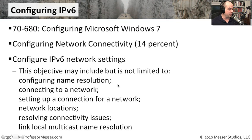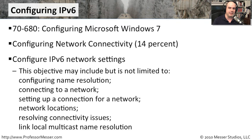This covers configuring name resolution, connecting to a network, setting up connections for network locations, resolving connectivity issues, and link-local multicast name resolution. IPv6 is the latest transport technology, and as we migrate away from IPv4 toward IPv6, it's especially important we know how to configure our Windows 7 desktops to take advantage of that.